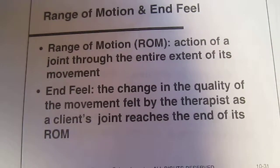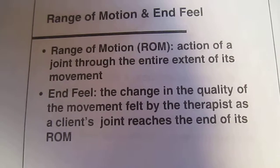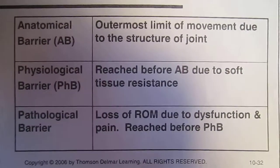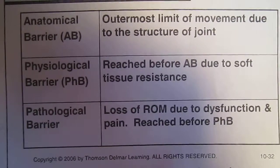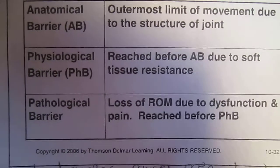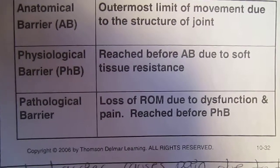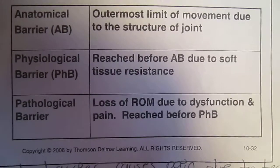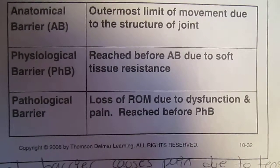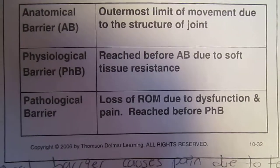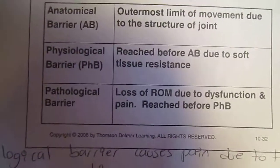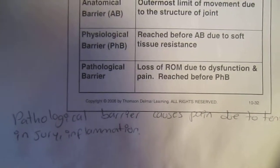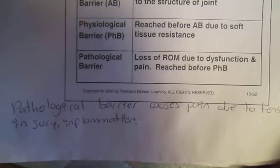Empty end feel: an abrupt restriction due to pain, such as muscle spasm. Barriers to movement — there are three. Anatomical barrier: the outermost limit of movement due to the structure of the joint. Physiological barrier: reached before the anatomical barrier, due to soft tissue resistance. Pathological barrier: loss of range of motion due to dysfunction and pain, reached before the physiological barrier. The pathological barrier causes pain due to tension, injury, and inflammation.